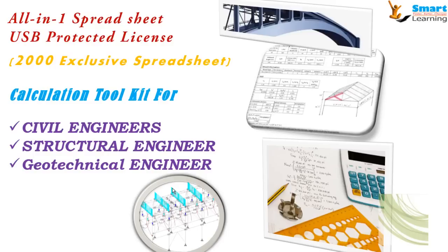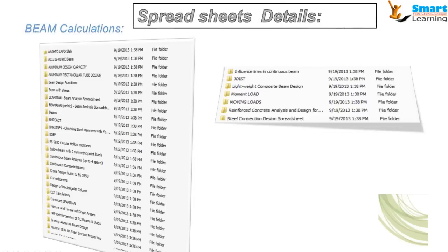Our release of the calculation toolkit comprises of 2000 exclusive spreadsheets which are available on a USB protected license. You can use it in your office or home PCs — unlimited use through that USB. This is an all-in-one spreadsheet collection comprising all the design calculations for civil engineers, structural engineers and geotechnical engineers.